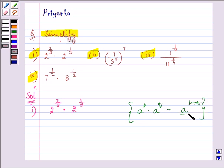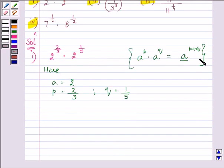Now here we have a common base that is 2, where a is 2, p is 2 by 3, and q is 1 by 5. So we can just substitute the values in this identity and carry on with our solution.